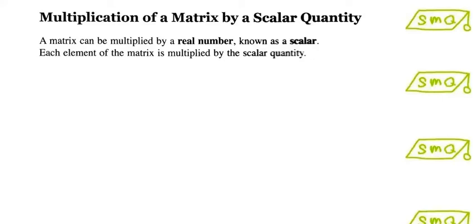A matrix can be multiplied by a real number, which is known as a scalar. Each element of the matrix will be multiplied by the scalar quantity. Let's take a look at this example.